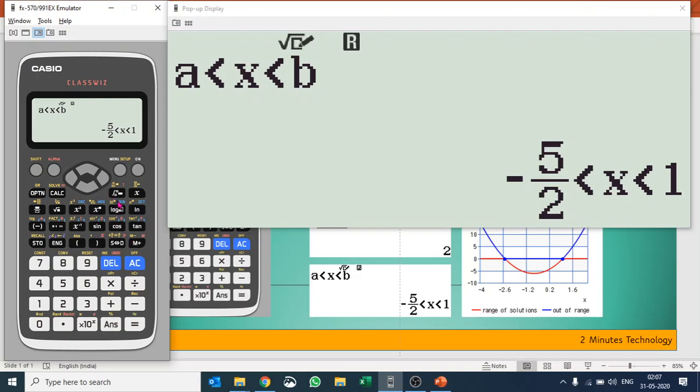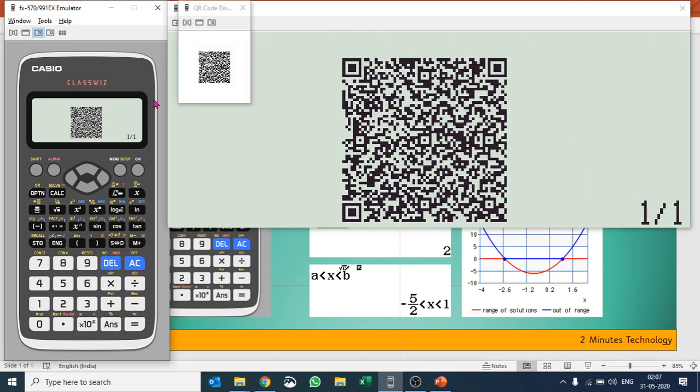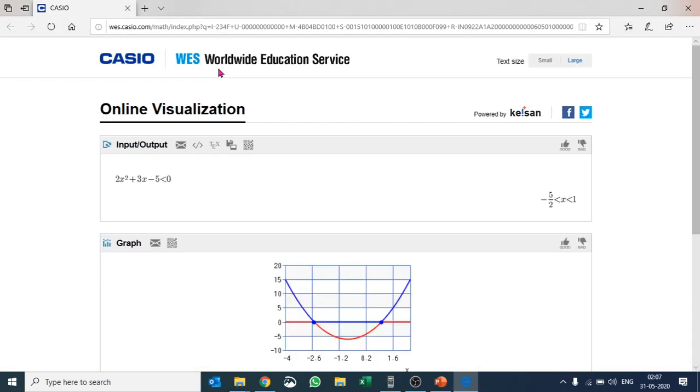Similarly, if you would like to solve some other functions as well, you can take degree 2, 3, or 4 polynomial inequalities. Don't forget that you can also check out the graphical portion of it by generating a QR code.